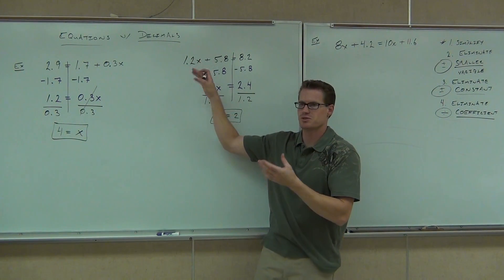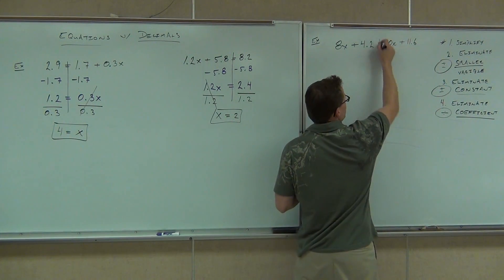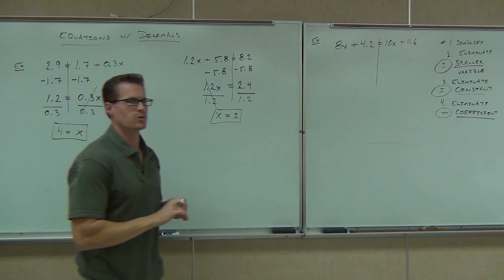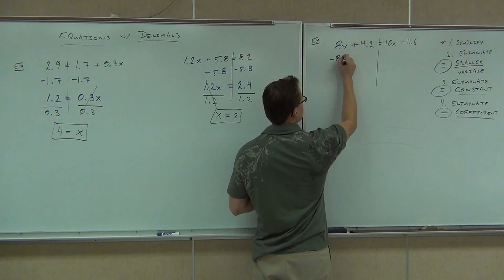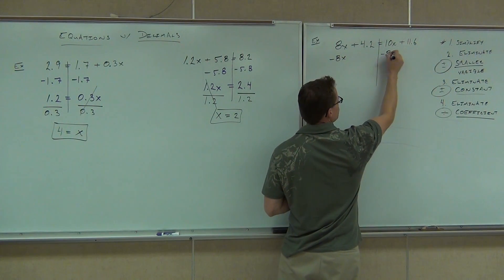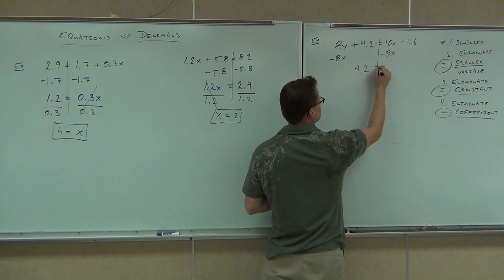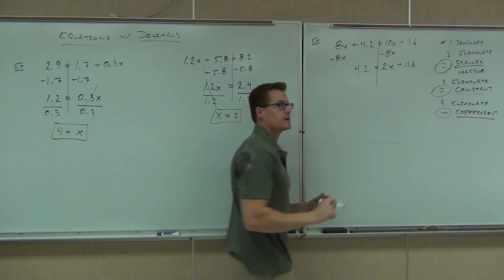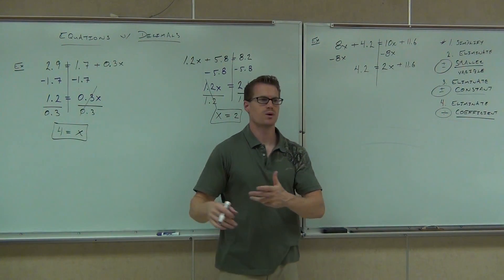So over here, you didn't have the two variables. It was kind of like a step for free. Over here, though, we wouldn't be able to simplify it, but we would be able to get rid of our smaller variable. What is our smaller variable? How are you going to get rid of it? Yeah, you want to get rid of the whole thing. So no division here. That's your last step. We get 4.2 equals 2x plus 11.6. Hey, now we've got a problem that looks like these over here. Now we can solve it the rest of the way.